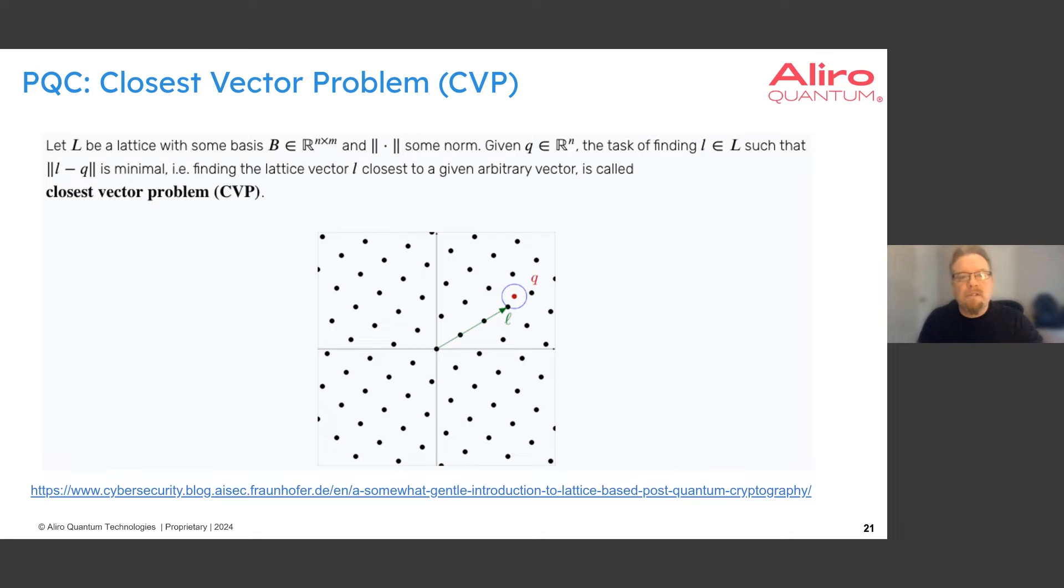A related problem is called the closest vector problem. In this case, we have a lattice defined by these basis vectors, and we have a query vector that's not on the lattice. And we're saying, what is the vector in the lattice that's closest to our query vector Q?